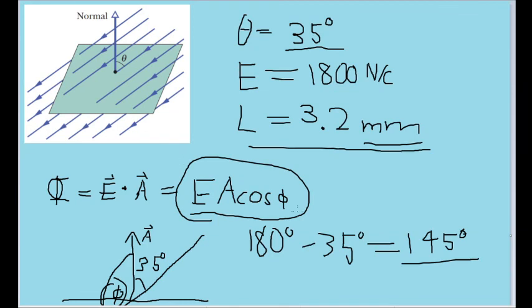Which, again, makes sense because due to the way the dot product works, any inward piercing electric field should always be a negative electric flux.